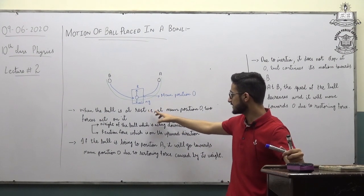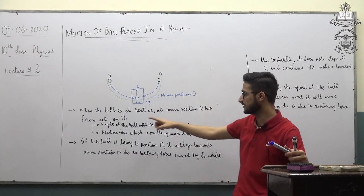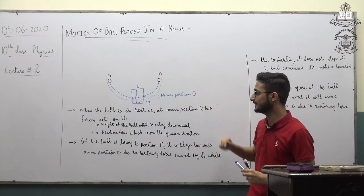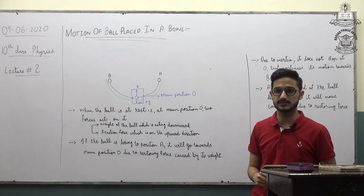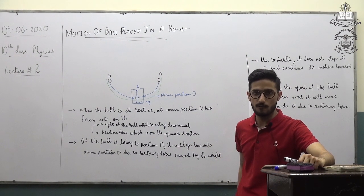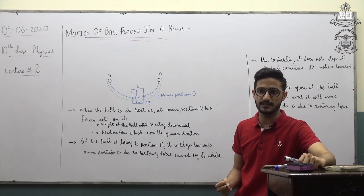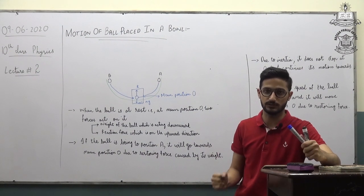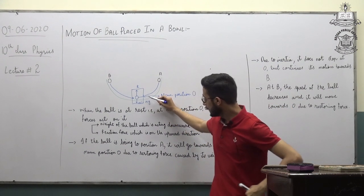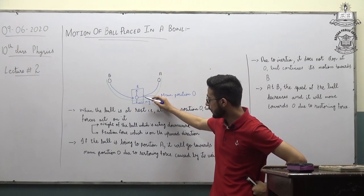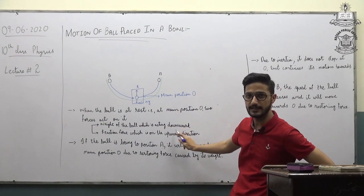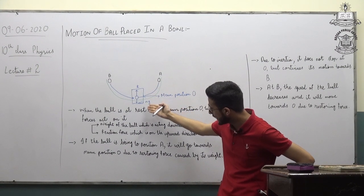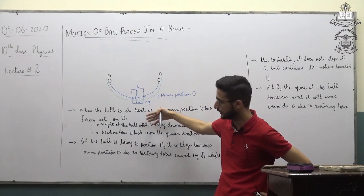If we discuss this ball at the mean position, two forces are acting on it. When the ball is at rest at mean position O, two forces act on it. Number one: weight of the ball, which is acting downward. As you know from Chapter 3 Dynamics in 9th class, weight is a force that attracts the body towards the Earth, and its direction is always downward.